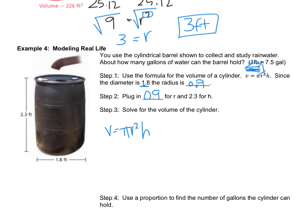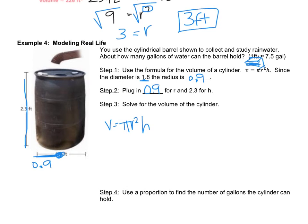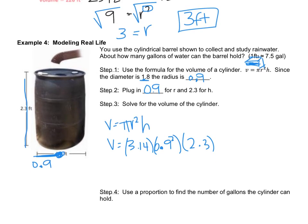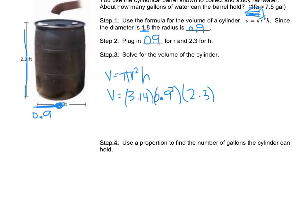So let's do it: V equals 3.14 times 0.9² times 2.3. Okay, now let's just crank that along. So first thing I'm going to do is 0.9², so that's 0.81. So I get 3.14 times 0.81 times 2.3. Now I just punch all those straight across in my calculator: 3.14 times 0.81 times 2.3.